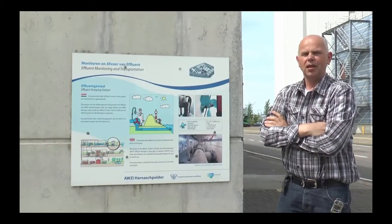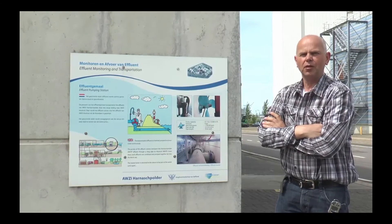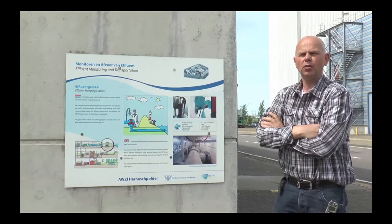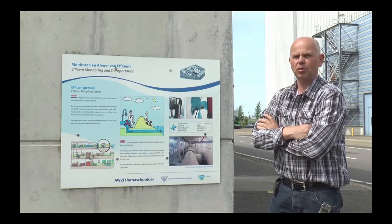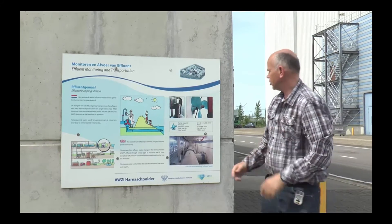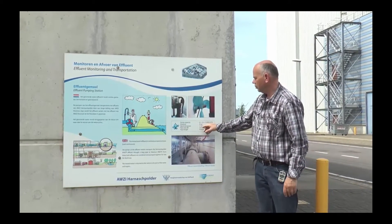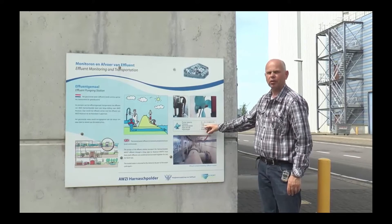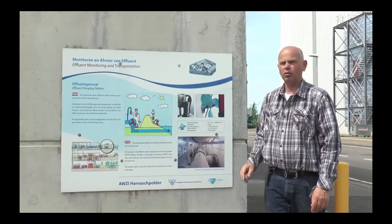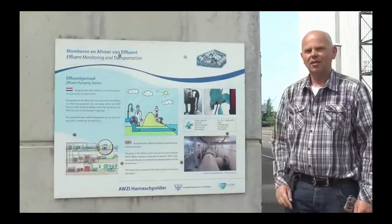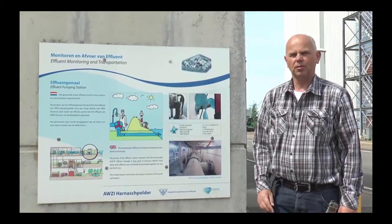The cleaning process is now done. Let's go to the transport pumps. Here we are standing in front of the effluent pumping station. The clean water is transported from here to the North Sea. The capacity of one pump is 1750 kilowatt, that is about 200 households in consumption. Let's go inside and take a look.